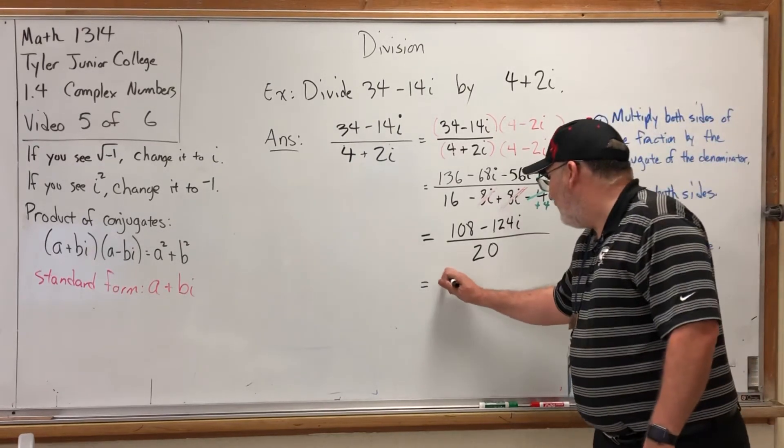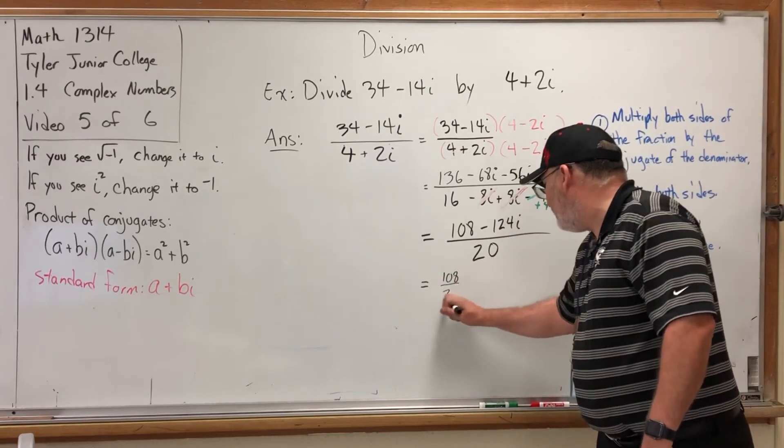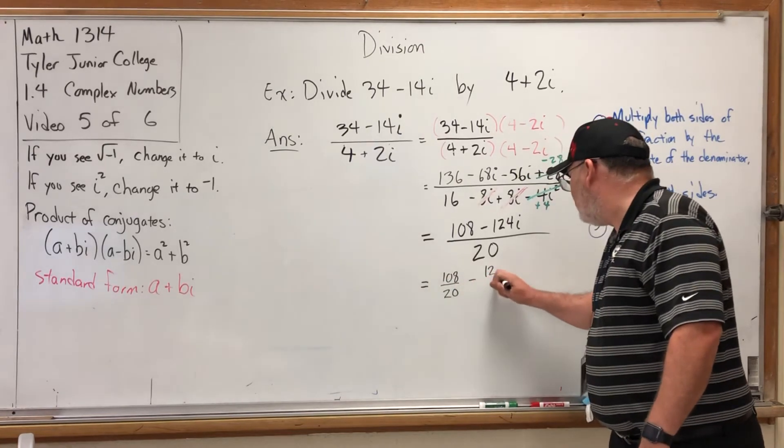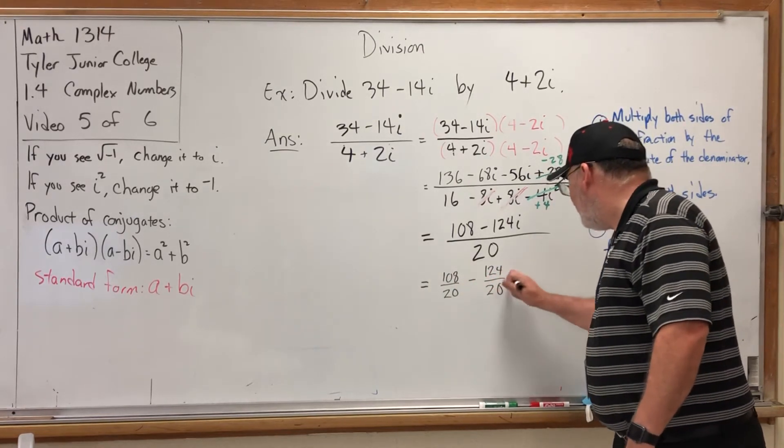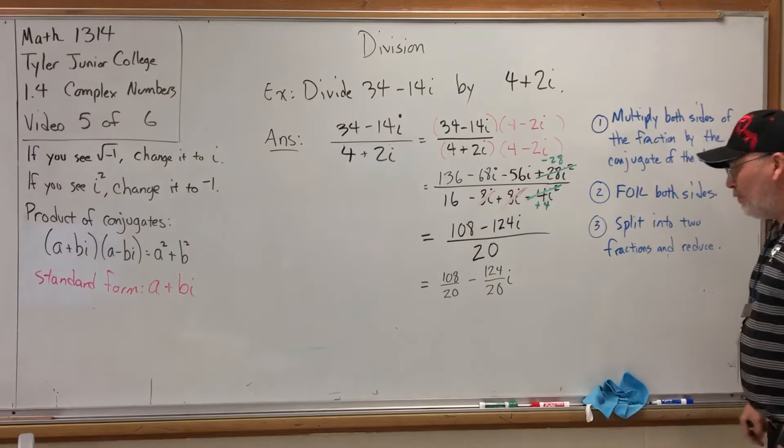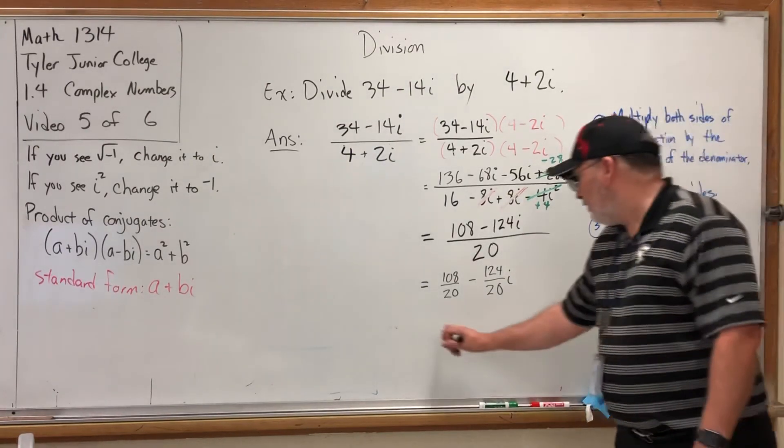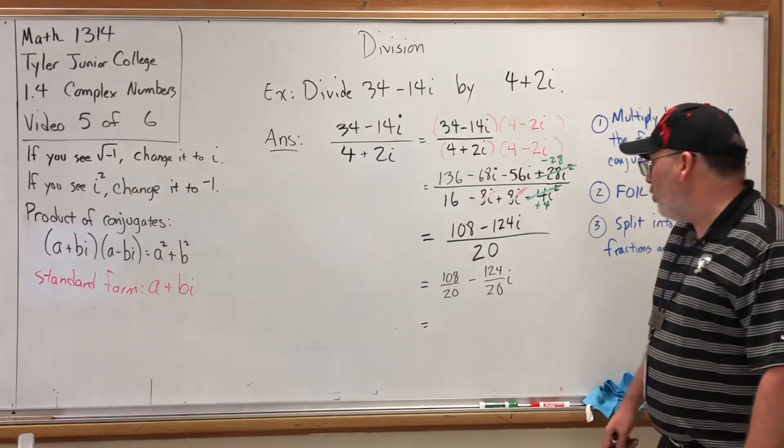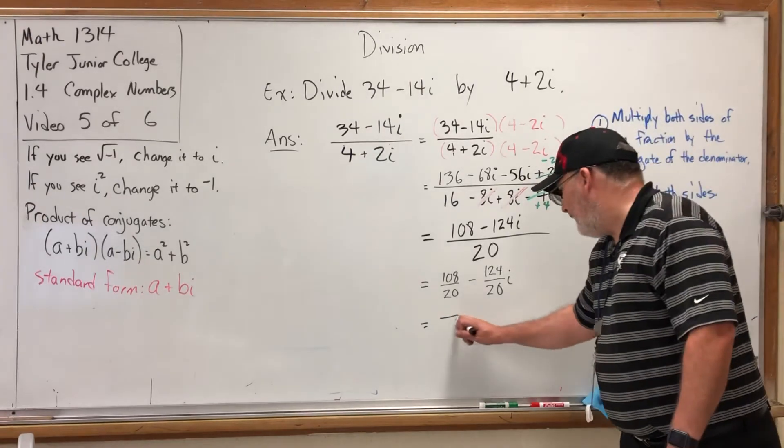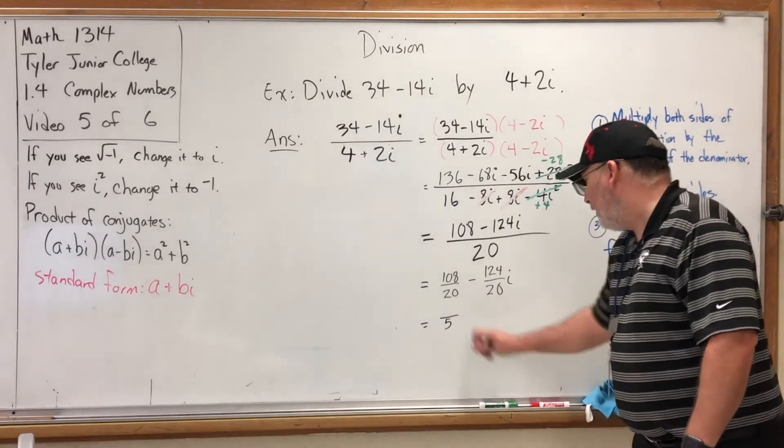Split into two fractions and reduce. And again, this move is for the most part cosmetic—I want to make it look the way I want it to look. If I split this into two fractions, I have—I thought I spotted a mistake—I have 108/20 - 124i/20.